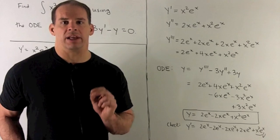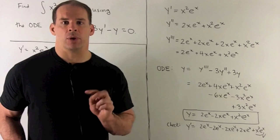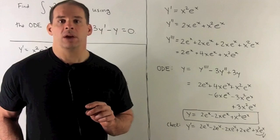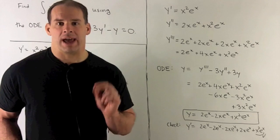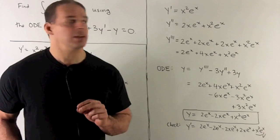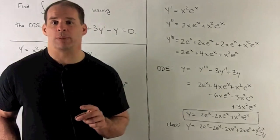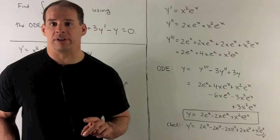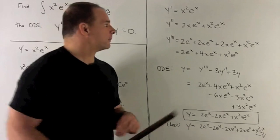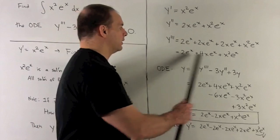So what does the ODE get us? Well, if we look at the terms in the ODE, we're assuming y prime is equal to x squared e to the x. I can get y double prime, y triple prime, just by taking the derivatives. So we work them out to get this term and these terms.